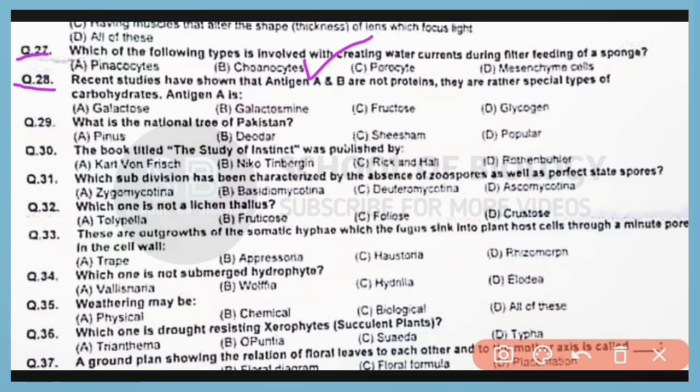Question number 28. Recent studies have shown that antigen A and B are not proteins. They are rather special types of carbohydrates. Antigen A is galactosamine. Correct answer is option B.